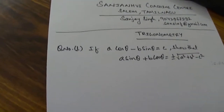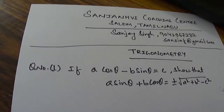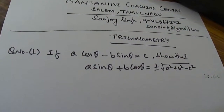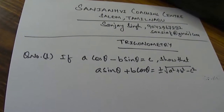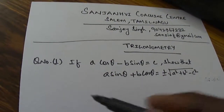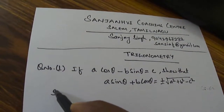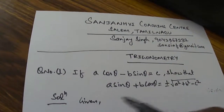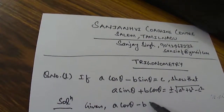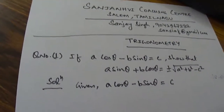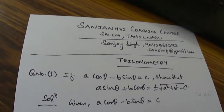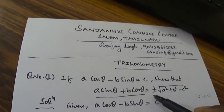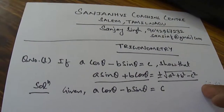So one question is given here: if A cos θ minus B sin θ is equal to C, we need to prove that A sin θ plus B cos θ is equal to plus or minus the whole root of A squared plus B squared minus C squared. So we are given that A cos θ minus B sin θ equals C, and the target is to prove A sin θ plus B cos θ equals ±√(A²+B²−C²).